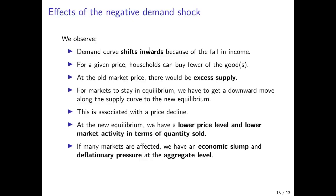To summarize: in the case of this crisis, a collapse in investment and household income shifts the demand curve inwards because households have less income available to spend. For a given price, households can buy only fewer goods, leading to excess supply and therefore downward pressure on the price. For the market to stay in equilibrium, we have a downward move along the supply curve towards the new equilibrium, associated with a price decline. At the new equilibrium, we therefore have a lower price level and lower market activity.